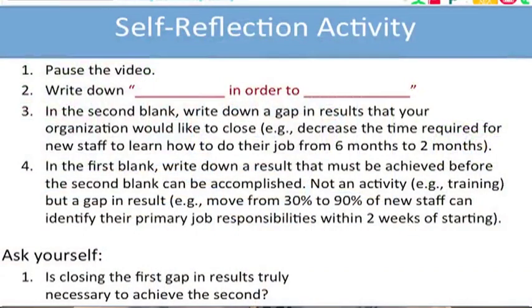Let's take a break here and do a self-reflection activity. You can pause the video. I'll ask you to write down a simple statement starting with a blank 'in order to' blank. Start with the second blank: write down a gap in results that your organization would like to close. Then in the first blank, write down another gap in results that must be closed in order to achieve the second gap in results that you've already identified.